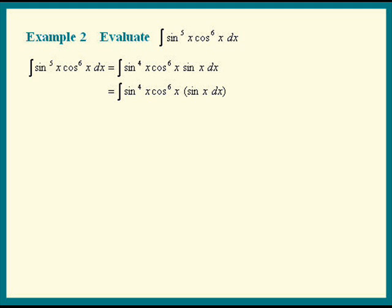The trig identity we use is sine squared is 1 minus cosine squared. So in this problem, we're going to let u be cosine of x. du is negative sine x dx.